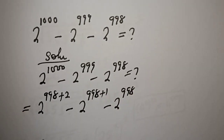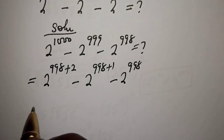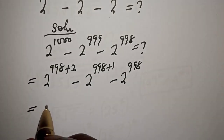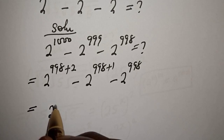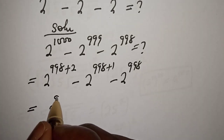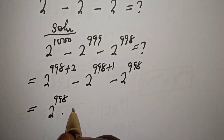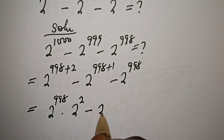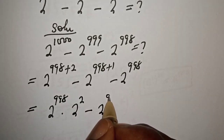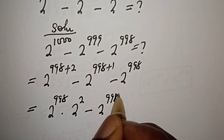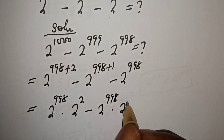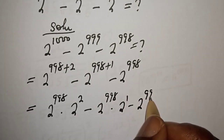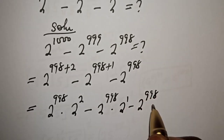This equals 2 raised to power 998 multiplied by 2 raised to power 2, minus 2 raised to power 998 multiplied by 2 raised to power 1, minus 2 raised to power 998.